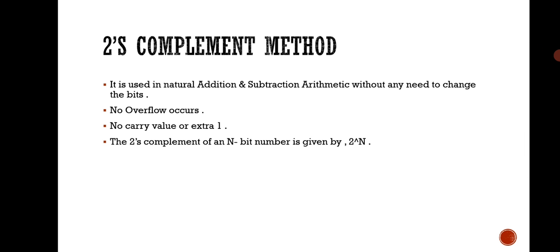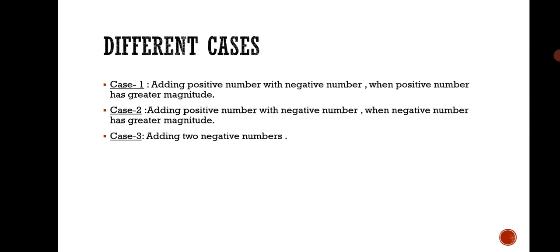That is the purpose of the two's complement method. In one's complement, we put one wherever we have zeros and zero wherever we have ones. In two's complement, there is no need to change bits like that, so there is no overflow problem — no occurrence of a carry value or extra one when we add two binary numbers. To obtain the two's complement of an n-bit number we can use the formula: 2 to the power n.